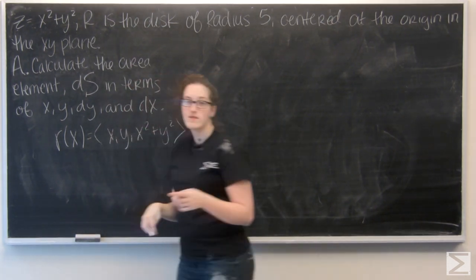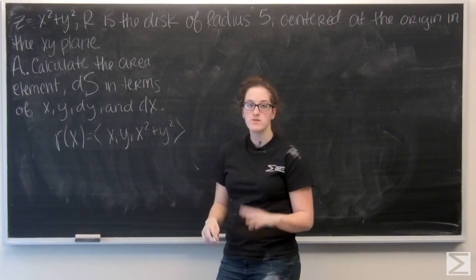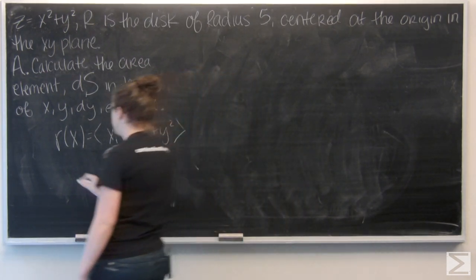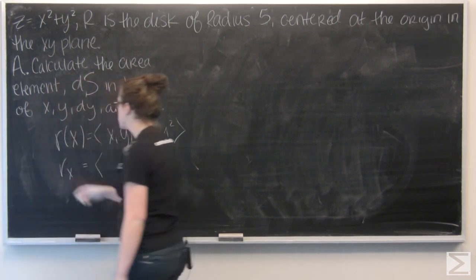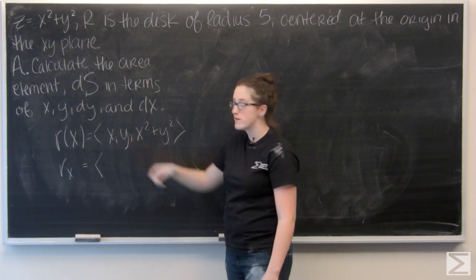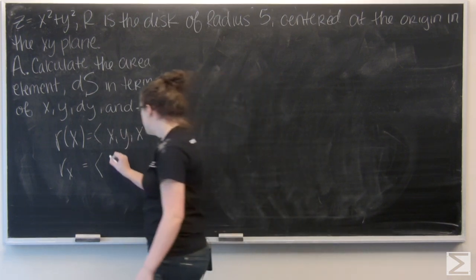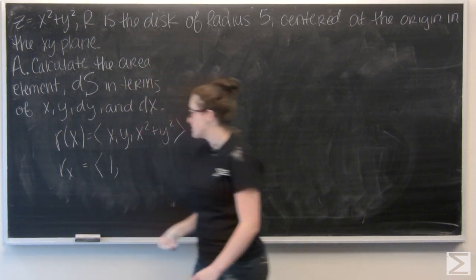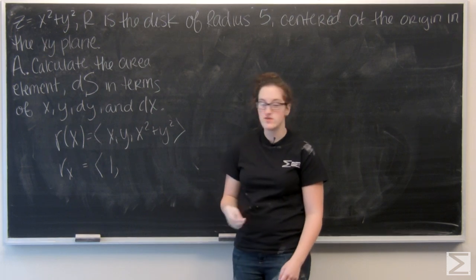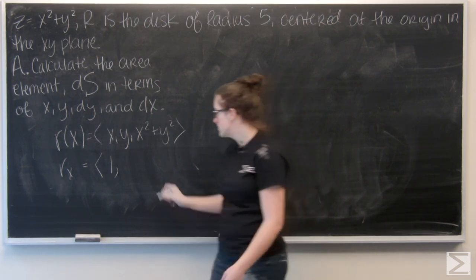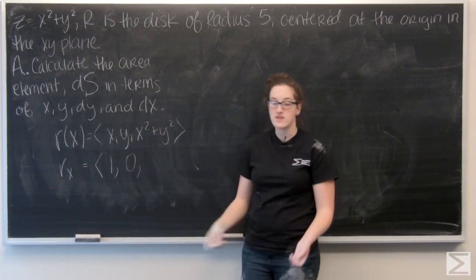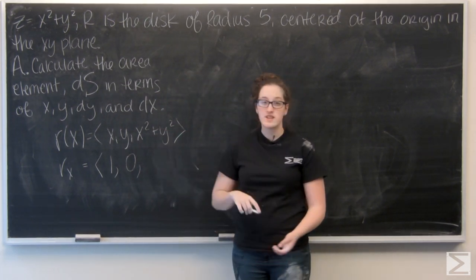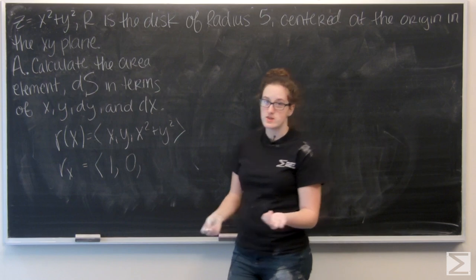And now I want to find rx and ry, which are just the partial derivatives with respect to x and y. So let's go ahead and do rx. The derivative of x is going to be 1, but this partial derivative of y is like a constant, so the derivative of y is going to be 0. And then similarly for x squared plus y squared, we're only looking at the x squared, and the derivative of that is going to be 2x.